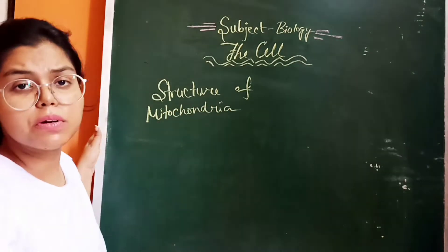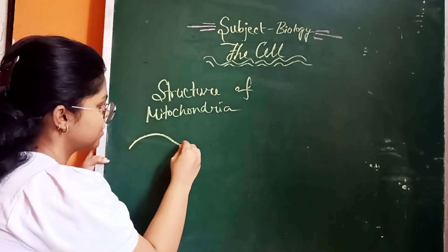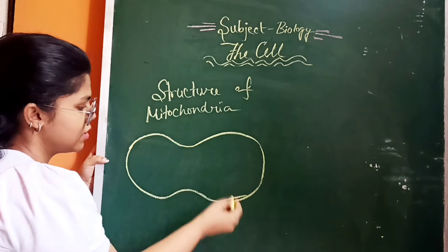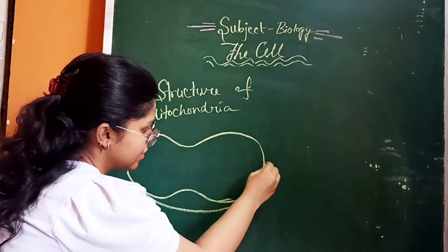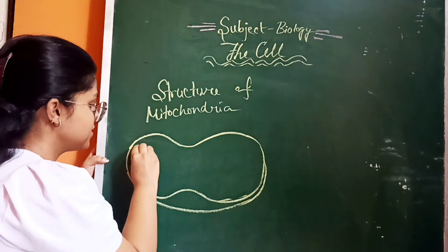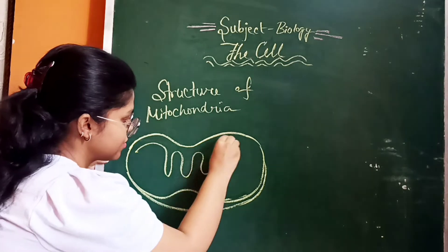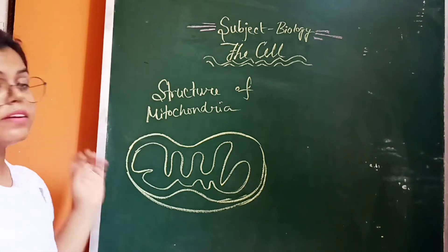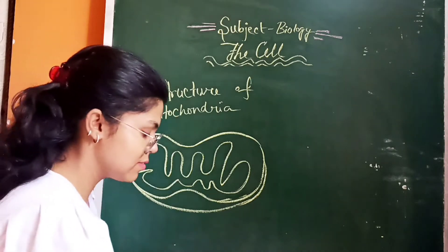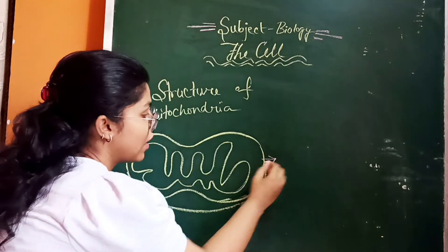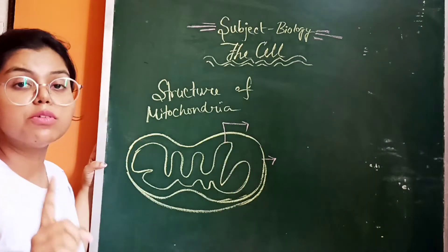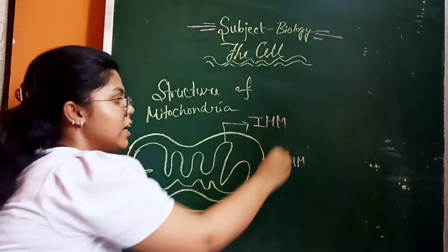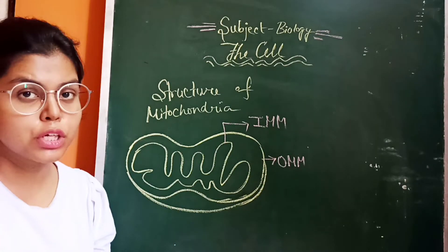Mitochondria look like an oval shape. There are two membranes: one is the outer membrane and another one is the inner membrane. The outer mitochondrial membrane is known as OMM, and the inner mitochondrial membrane is IMM.